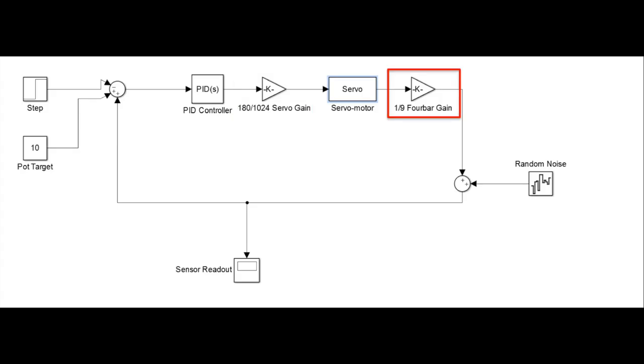The 4 bar gain was 1 over 9 because for every 9 degrees the servo turned, the beam turned approximately 1 degree.